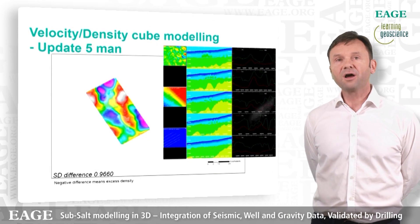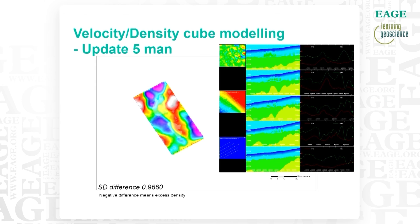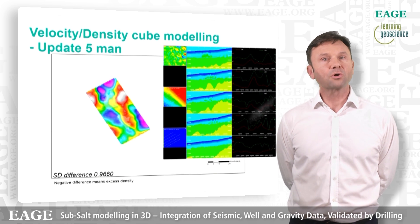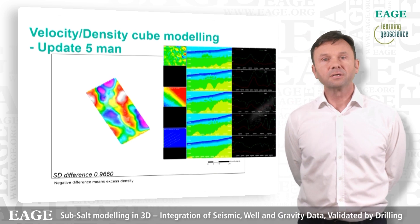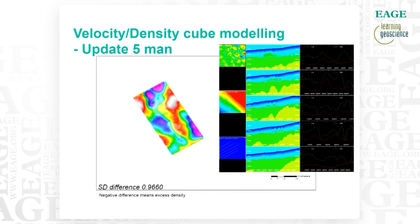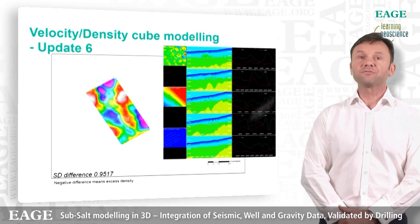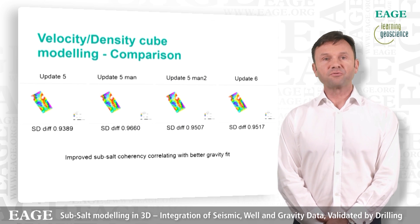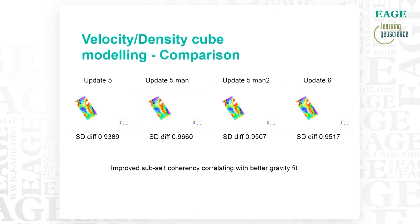Moving to Update 5 with a manual adjustment on the velocity picks above the salt, we see that the standard error changes slightly, so the 3D gravity modeling seems to be somewhat sensitive to very detailed and subtle changes in the velocity model. That gave us hope that we might be able to use the gravity modeling to quantitatively choose the best velocity model for depth migration. Moving on to a second manual update, the standard deviation changes once more, and for a sixth update it changes again and actually worsens, which is interesting.